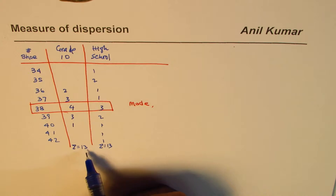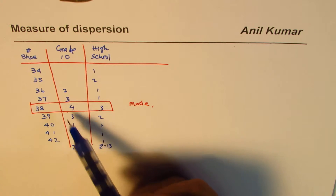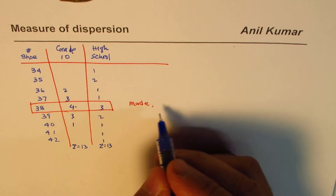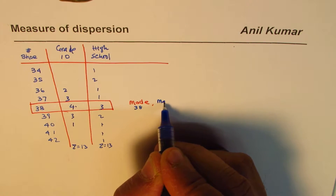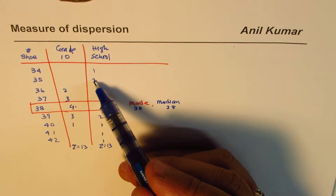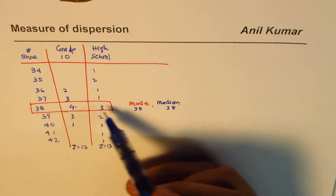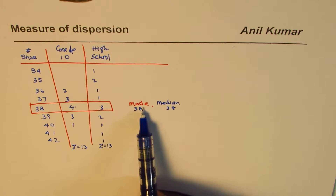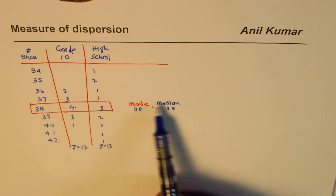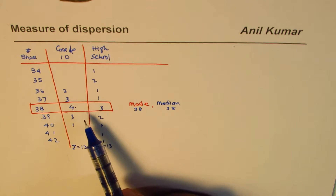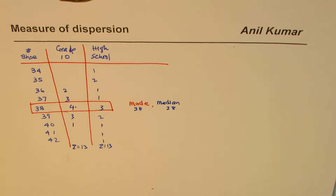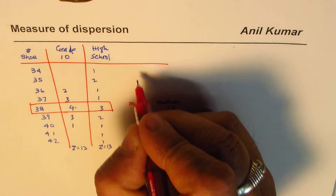With a cumulative frequency arrangement, position 6.5 falls at size 38, so the median is 38 in both cases. Similarly, both groups show the median landing in the same place. So what we find here is that mode and median — and indeed the central tendencies — are the same for both datasets.